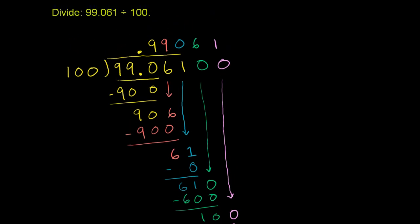So our final answer is 99.061 divided by 100 is equal to 0.99061. And I just put a leading 0 here, just sometimes it makes it easier to read and you make sure people understand that there's a decimal there. It just makes it less prone to errors. And we are done.